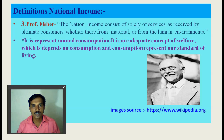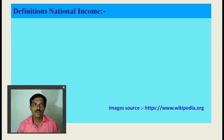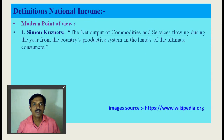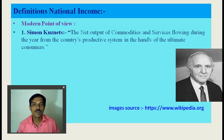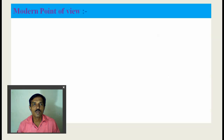Dr. Marshall's definition, Prof. Pigou's definition, and Fisher's definition are all from the traditional point of view. From the modern point of view, the definition of national income is given by Simon Kuznets: 'The net output of commodities and services flowing during the year from the country's productive system into the hands of ultimate consumers is called national income.' This modern definition is given by Prof. Simon Kuznets.